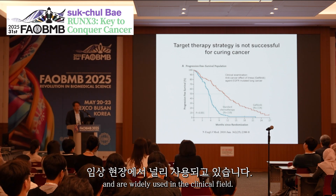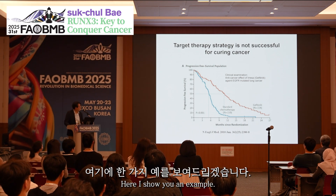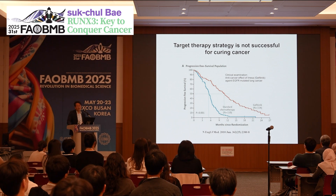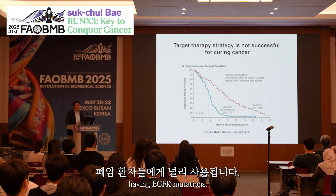This concept was heavily studied and developed, producing very nice chemicals which can effectively inhibit mutated oncogenes. Many targeted therapy chemicals were developed and widely used in the clinical field. Here I show you an example: Gefitinib, also called Iressa, was developed about 20 years ago and widely used for lung cancer patients having EGFR mutation.